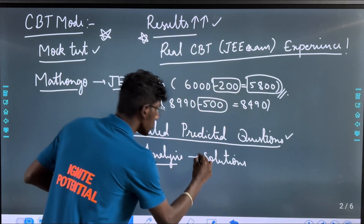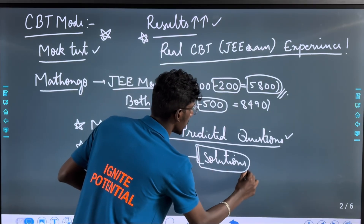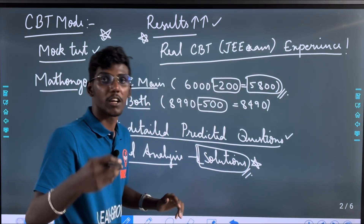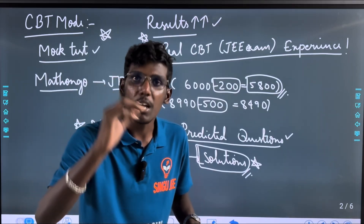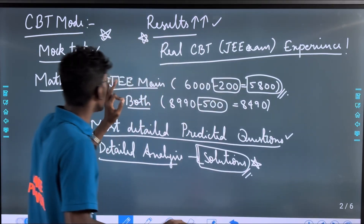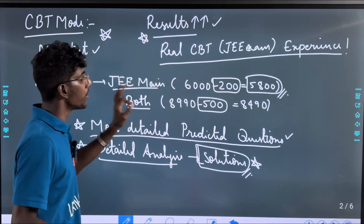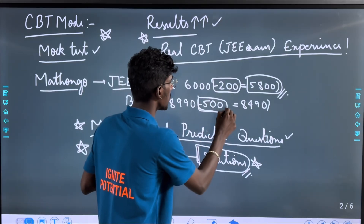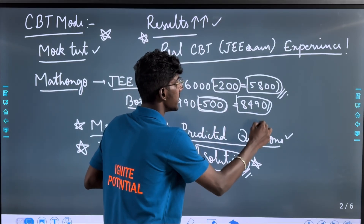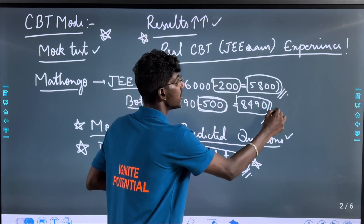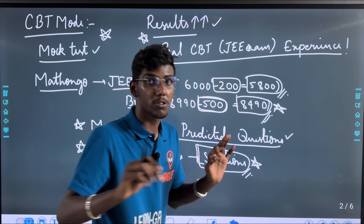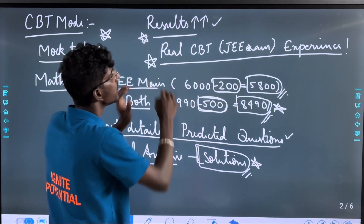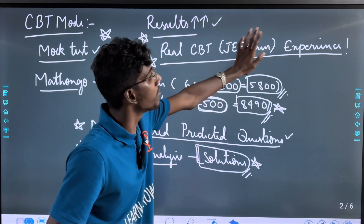If you have a solution, you have to take a convenient time. You have to take the JEE Main and JEE Main plus Advanced. You have to take the JEE Main plus Advanced 500 rupees discount — 8,490 rupees. If you have a link in description and discount code, you will be able to take the real CBT JEE exam.